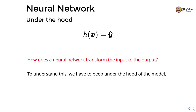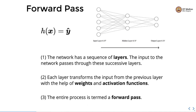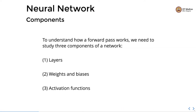Let us understand what happens under the hood of a neural network — specifically, how it transforms the input to the output. In the forward pass, features enter the input layer, pass through neurons in the hidden layers, and the output of the hidden layer is passed to the output layer for the final output. The network has a sequence of layers; each layer transforms the input from the previous layer using weights and activation functions. This entire process is termed the forward pass.